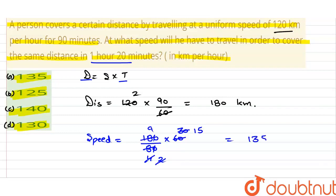तो 15 into 9, that is 135 km per hour. ये new speed होगी. Option A is correct.